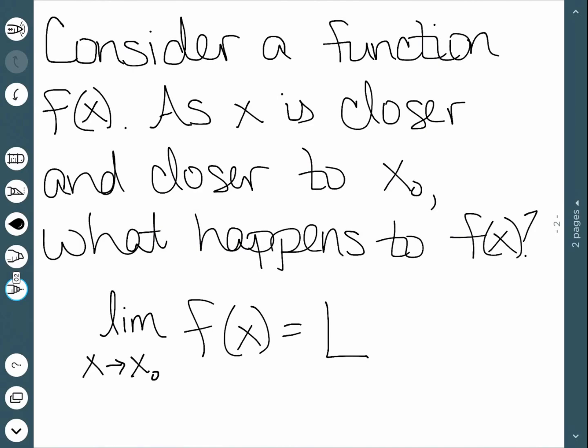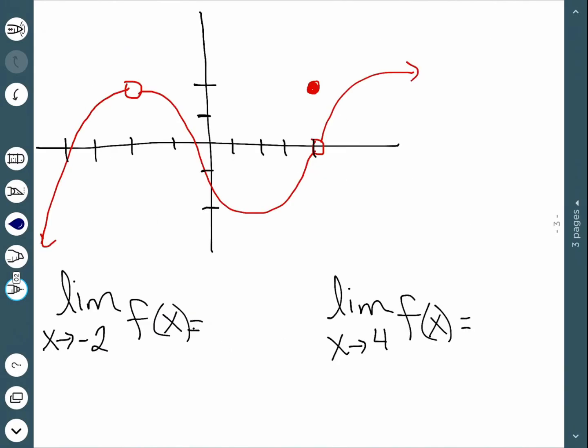So now that we have a little bit more of an idea of what's going on, let's do an example. Here we can see a graph, and I have two limits written down at the bottom that we're going to try to evaluate. The first is the limit as x approaches negative 2. So we want x to be negative 2, and we're going to consider what's happening really close to that, and see exactly what's going on in the y direction.